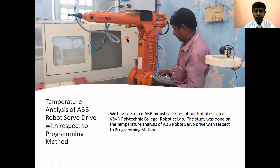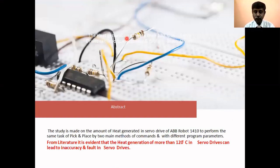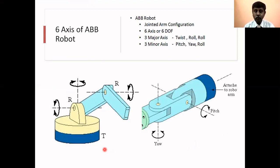This robot has a servo drive to move, and from the literature I have heard that if the heat generated in this servo drive is more than 120 degrees centigrade, the servo drive will lead to inaccuracy and a fault. So how to rectify this was the theme of this paper.